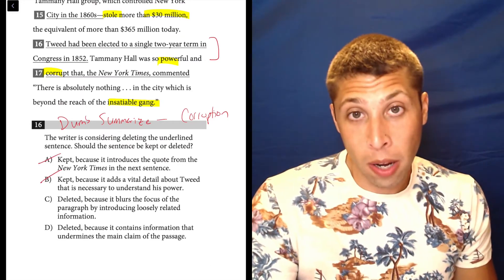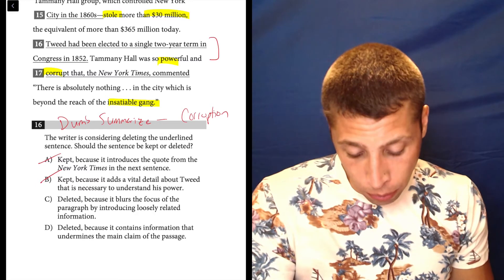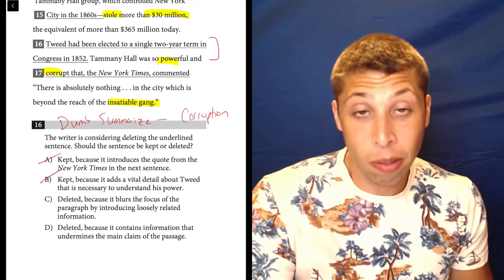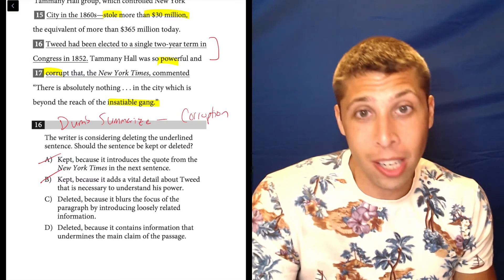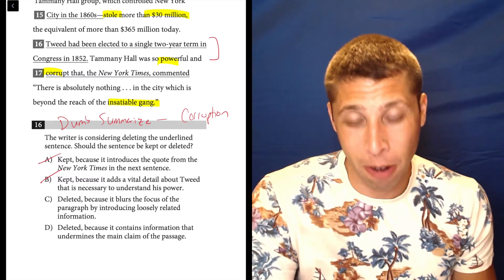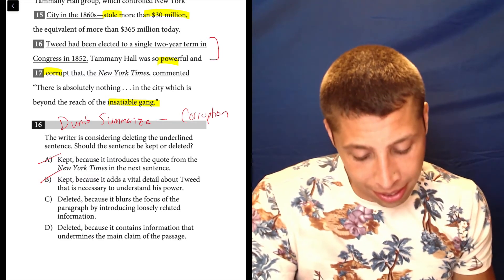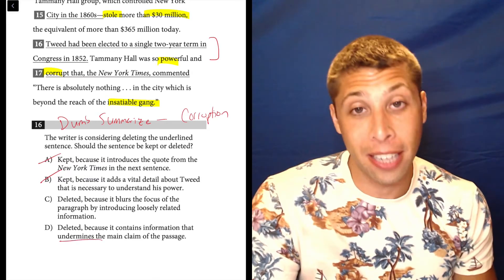And then if we look at the two examples, it blurs the focus of the paragraph by introducing loosely related information. So yeah, it's kind of related in that it's about Tweed, but loosely because the paragraph is more about corruption. Or D, delete it because it contains information that undermines the main claim of the passage.